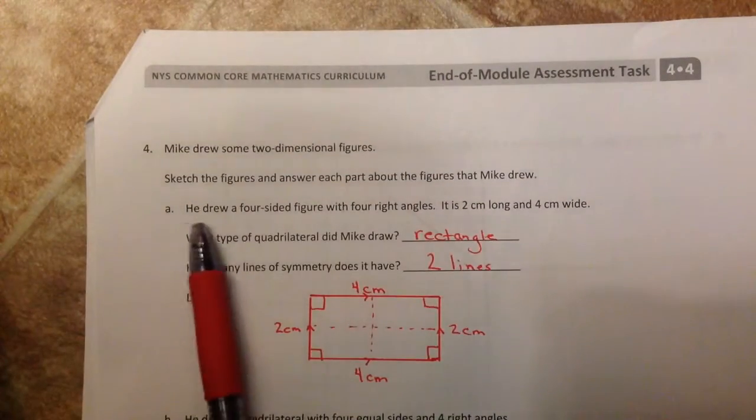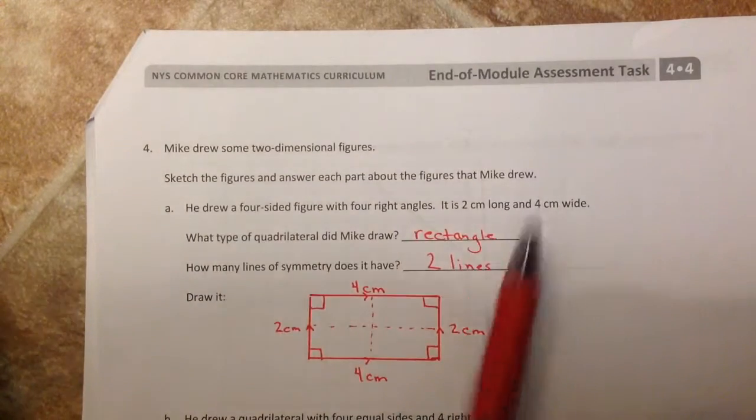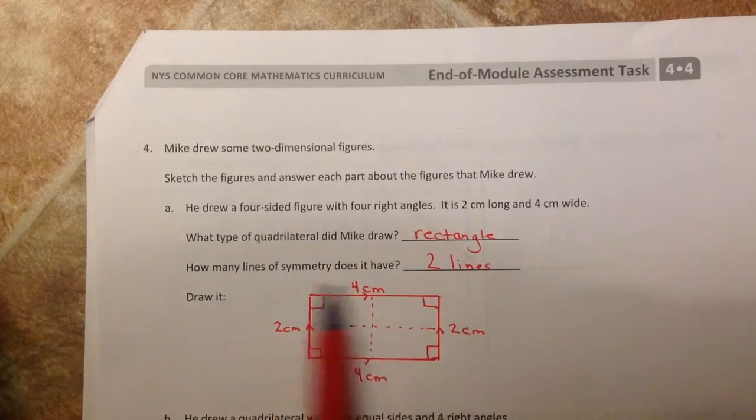For four, it asked you to draw a four-sided figure with four right angles, but it gave us measurements. So I used my ruler to make two, four, two, four.